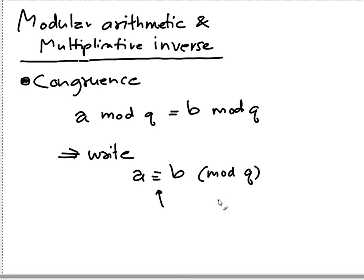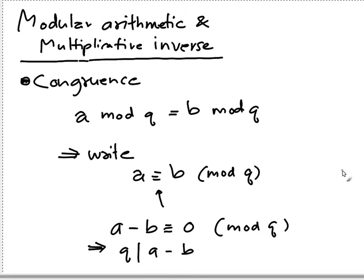In this case, this implies that if you say A minus B is going to be equal to zero modulo Q as well. So this implies that Q divides A minus B. This is a quick review on congruence.